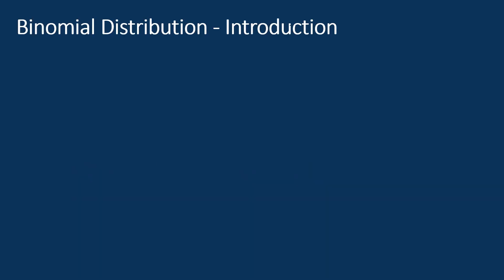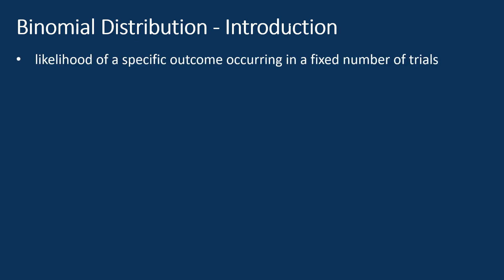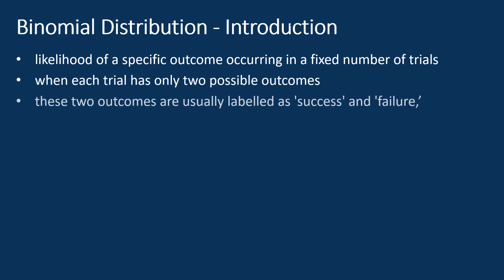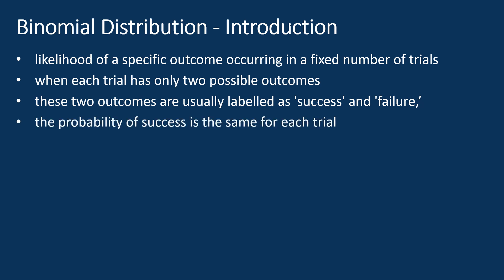First, let's discuss what binomial distribution is. In probability theory, a binomial distribution helps us understand the likelihood of a specific outcome occurring in a fixed number of trials, when each trial has only two possible outcomes. These two outcomes are usually labeled as success and failure, and the probability of success is the same for each trial.